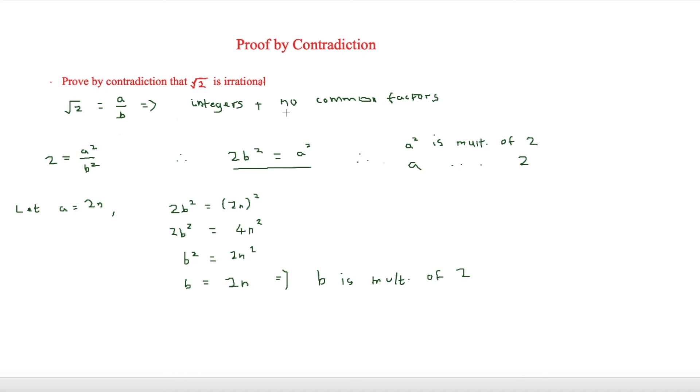then they are meant to have no common factors as we said. But because they clearly do have a common factor of 2, this contradicts the original statement, and that shows that √2 is an irrational number.